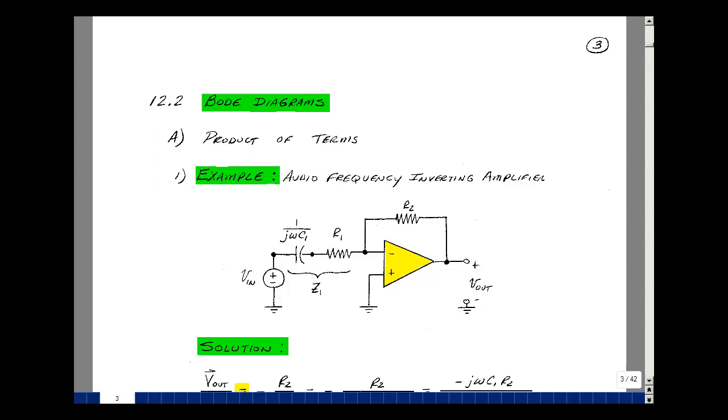In this chapter, we're going to take a look at sketching the magnitude and angle versus frequency with a series of straight line segments which will allow us to approximate the behavior of the transfer function. This technique was invented by Heinrich Bode in the 1930s when he worked at Bell Laboratories.